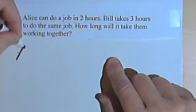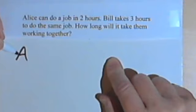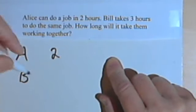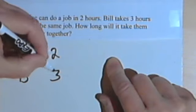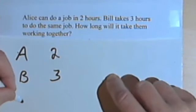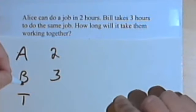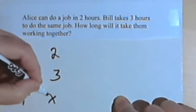So I guess my information, I'll just write my information down first. Alice, we'll call her A, takes two hours, and Bill takes three hours, and together, well, we don't know how long it takes them together. We'll call that x hours.